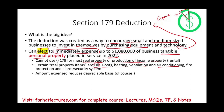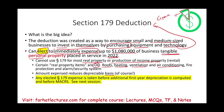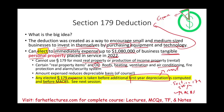Any amount you expense under Section 179 will reduce your basis. Any elected Section 179 is taken before additional first-year depreciation and before MACRS. The ordering is: first Section 179, then additional first-year depreciation, then MACRS. We already covered MACRS; now we're covering Section 179, and in the next session we'll cover first-year depreciation.